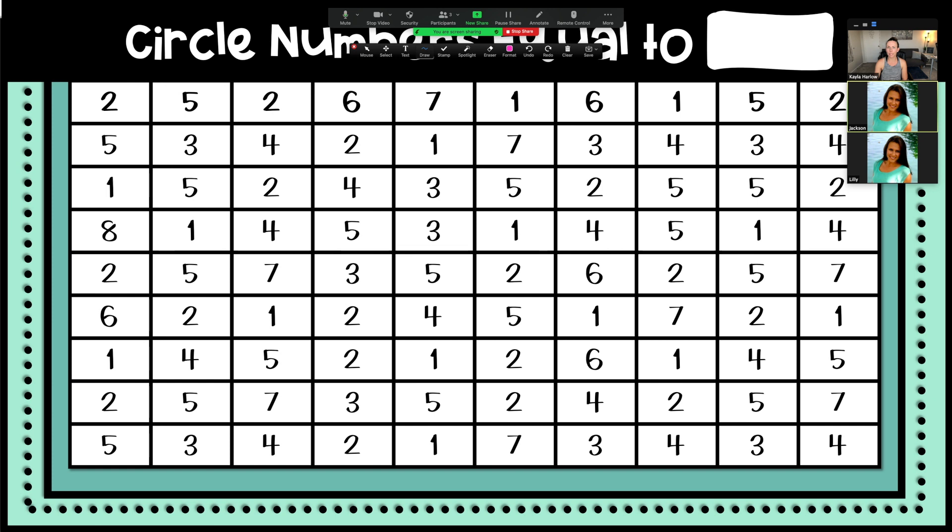So my students are now instructed to go ahead and circle or highlight any two partners that are touching each other that add up to 10.